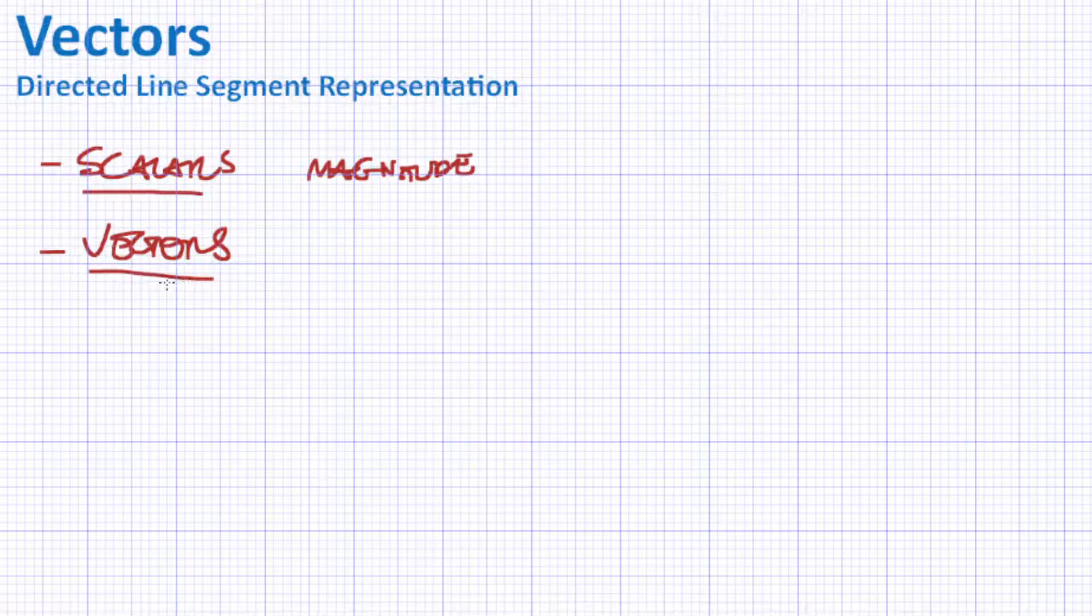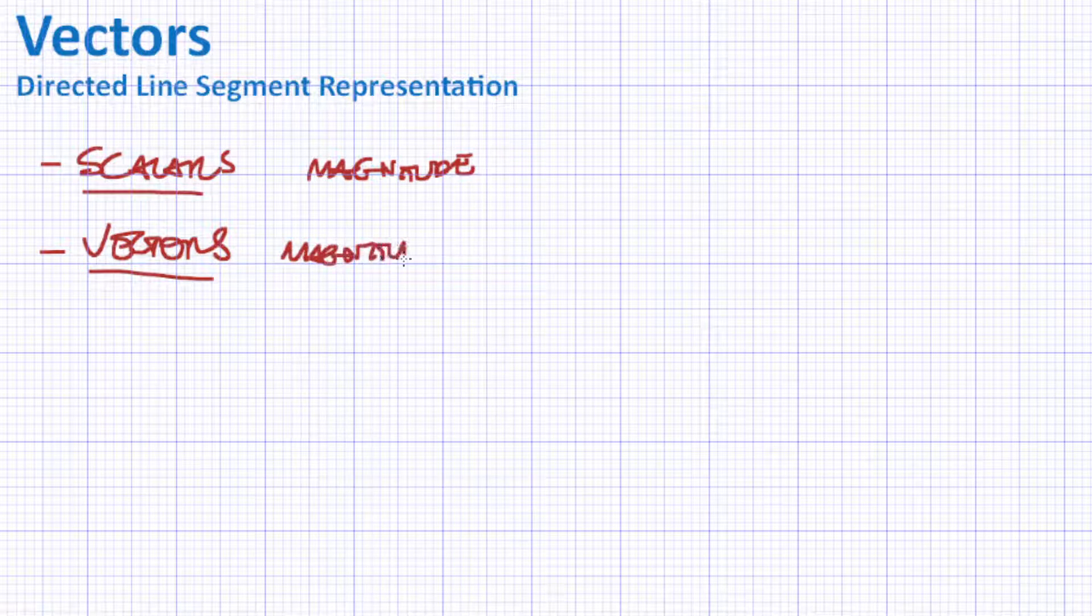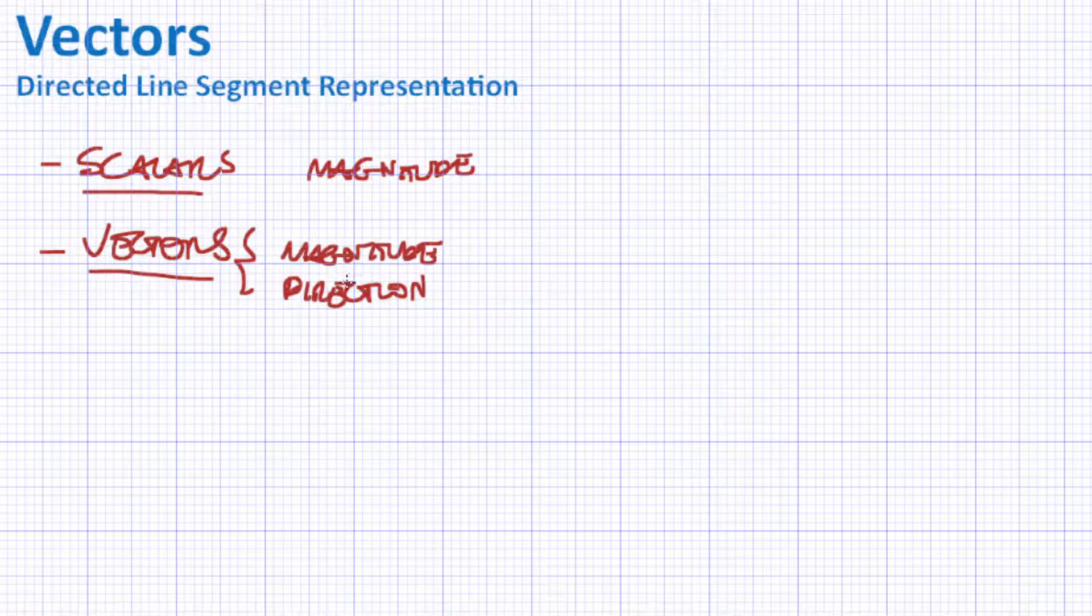But when we're discussing vectors, then we will not only have a magnitude, that means how large your quantity is, but also a direction. And since we're discussing something that has both magnitude and direction, we need a way to express that. And those quantities are expressed by vectors, because they can show magnitude and direction.